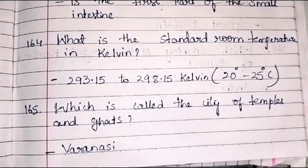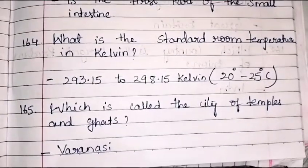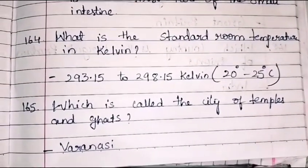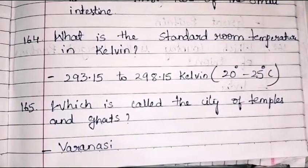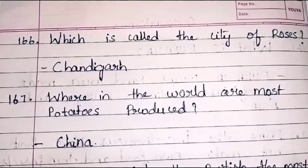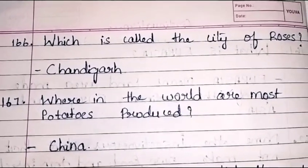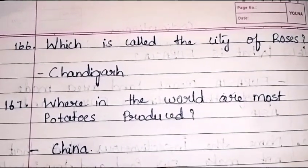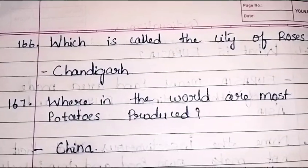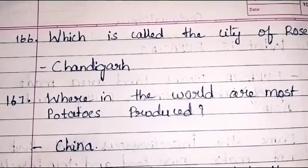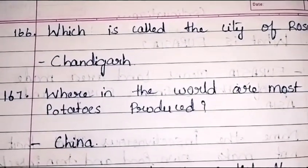Which is called the city of temples and ghats? The answer is Varanasi. Which is called the city of roses? Chandigarh is the city of roses.